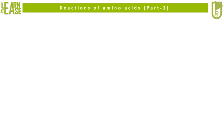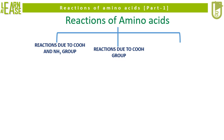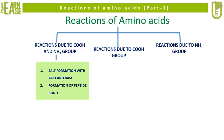Reactions of amino acids can be due to involvement of both amino group and carboxylic group, or reactions can be purely due to involvement of carboxylic group, or reactions can be purely due to involvement of amino group. Salt formation with acid and base, and formation of peptide bond, are the reactions of amino acids due to involvement of both amino group and carboxylic group.